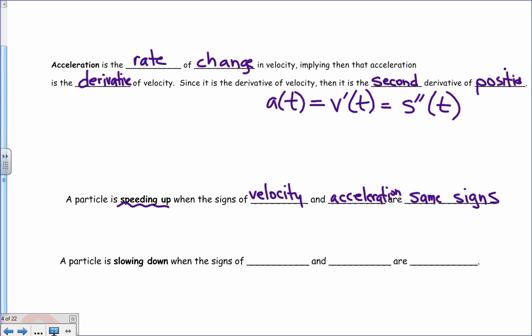So, in other words, to have a particle speeding up, the velocity must be greater than zero and the acceleration must be greater than zero. Or, the velocity is less than zero and the acceleration is less than zero. So notice you can have a negative acceleration but still be speeding up.